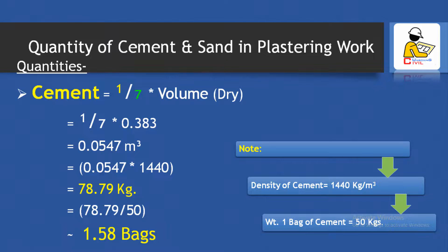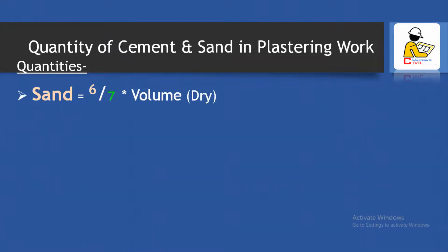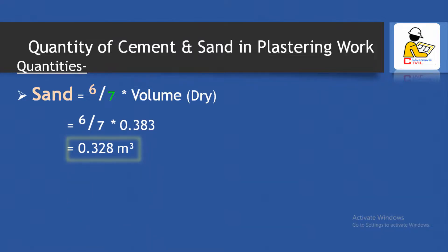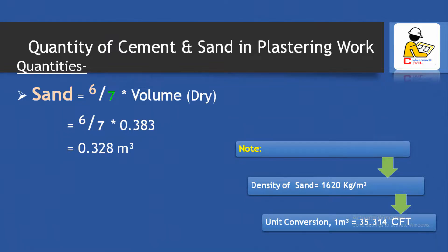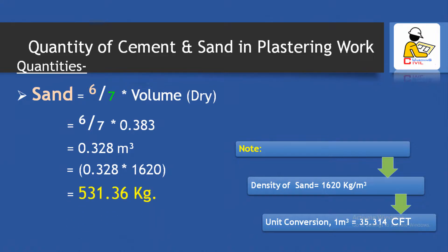To find the sand quantity, the volume proportion is (6/7) × dry volume of mortar, which equals approximately 0.328 cubic meter. The density of sand is approximately 1620 kg per cubic meter, and 1 cubic meter equals 35.314 cubic feet. Multiplying 1620 × 0.328 gives a sand weight of approximately 531.36 kg, or 11.58 cft after volume conversion.